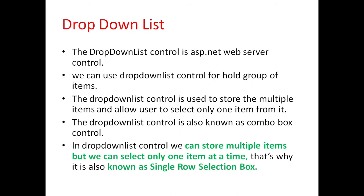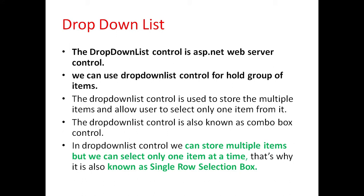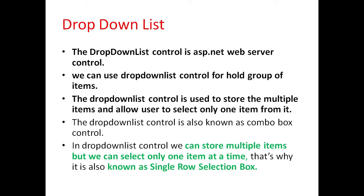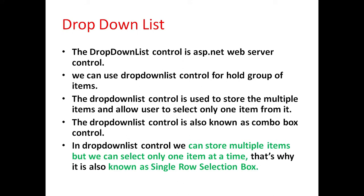First we will see drop down list. The drop down list control is an ASP.NET web server control. We can use it for a whole group of items. This control is used to store multiple items and allow the user to select only one item from it. The drop down list control is also known as combo box control, and since you can select only one item at a time, it is also known as a single row selection box.